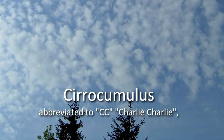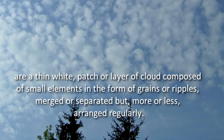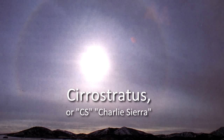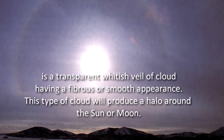Cirrocumulus, abbreviated to CC, Charlie Charlie, are a thin white patch or layer of cloud composed of small elements in the form of grains or ripples, merged or separated but more or less regularly arranged. Cirrostratus, or CS, Charlie Sierra, is a transparent whitish veil of cloud having a fibrous or smooth appearance. This type of cloud will produce a halo around the sun or moon.